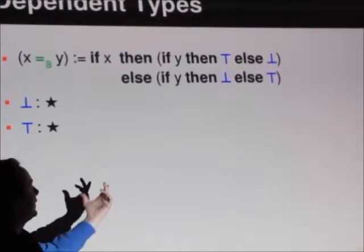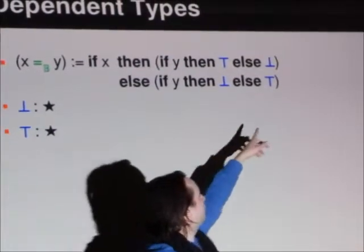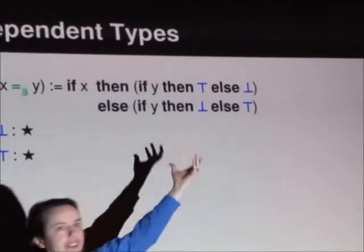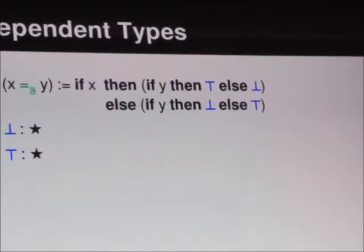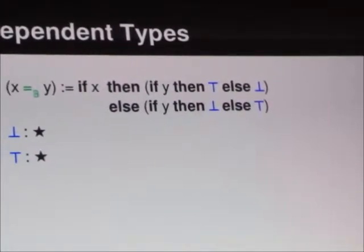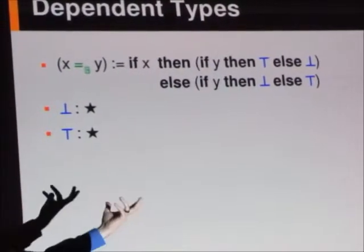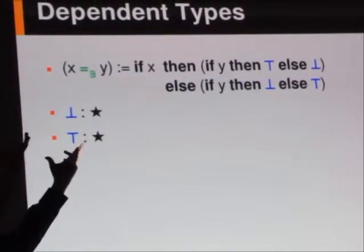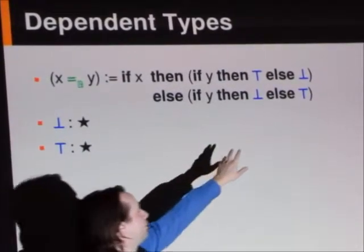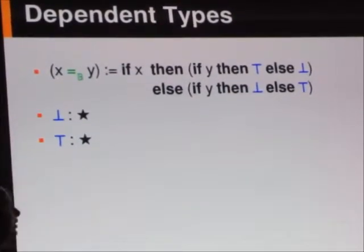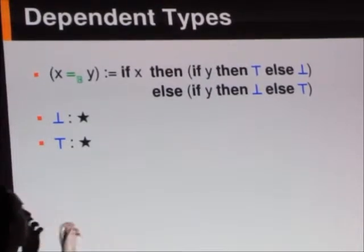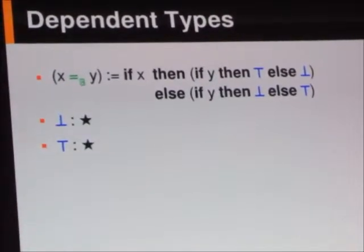If x is false, then if y is false, in this case over here, then we would return top, which is the logical truth that if x and y are both false boolean values, then they're the same boolean value. So we want this predicate to be true in that case. And here, we want to return false. We want logical falsity because y is true and x is false.